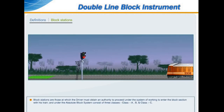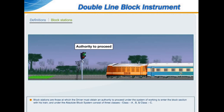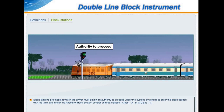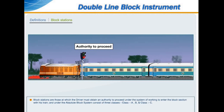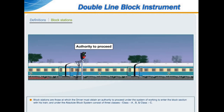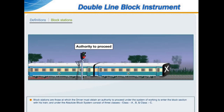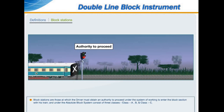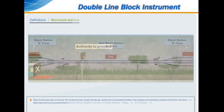Block stations are those at which the driver must obtain an authority to proceed under the system of working to enter the block section with his train. Under the absolute block system, block stations consist of three classes: Class A, Class B, and Class C.